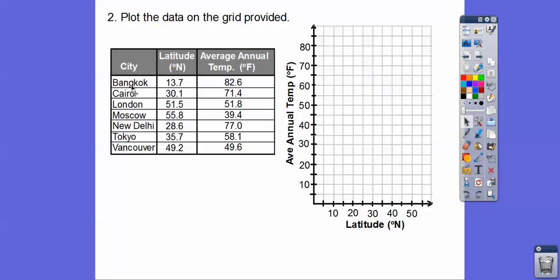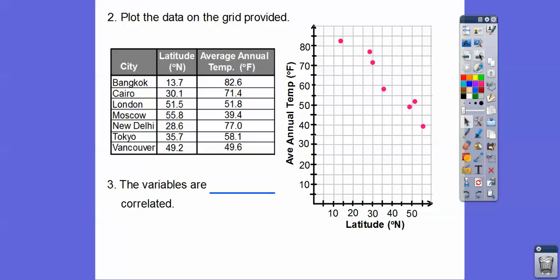Let's graph them one at a time. Here's the first one, and here's the second — London right there at 51 and a half. There's 50, a little bit past that, up to 51.8, about 52-ish. There's Moscow, and then the next ones. That one's pretty close to a line. The variables are negatively correlated because it's going down in a negative fashion, like a negative slope.